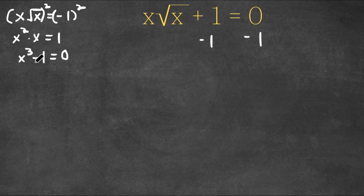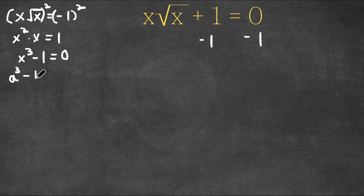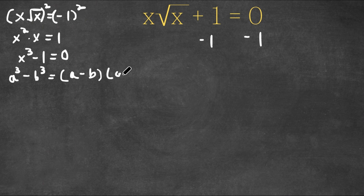I moved that one just so it could be simpler to square both sides. Now, if we have something in the form a to the power of three minus b to the power of three, this is actually equal to (a minus b) times (a squared plus a·b plus b squared).